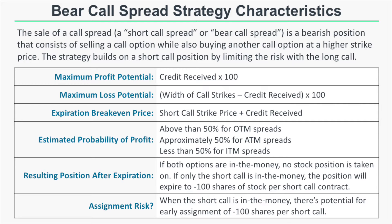The maximum profit potential of a bear call spread is the credit received times 100. The maximum loss potential is the width of the call strikes minus the credit received, times 100. The expiration break-even price is the short call's strike price plus the credit received — so that credit helps you out.